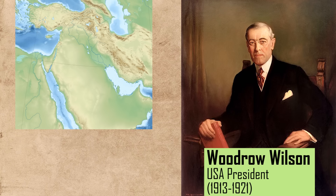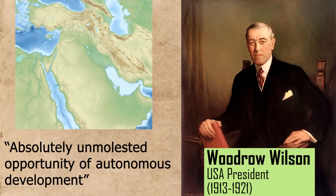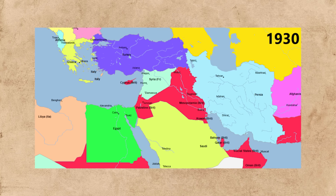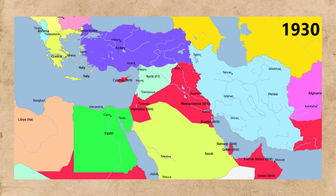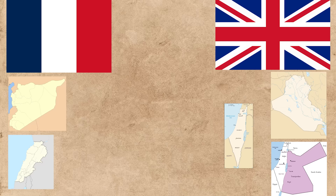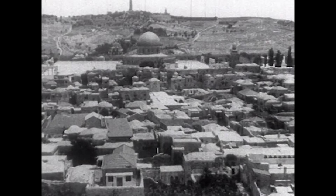Once the Allies won the war, US President Woodrow Wilson's calls for nationalities formerly under the Ottoman Empire to get an absolutely unmolested opportunity of autonomous development fell on deaf ears. The newly created League of Nations initiated the Mandate Power System, which more or less followed the designs of the Sykes-Picot Agreement. France received Syria and Lebanon, whilst Britain got Iraq, Transjordan and Palestine.